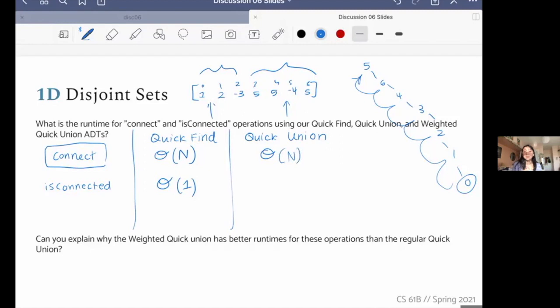And we see that all that happens in connect is that we find the parents of the two elements we're interested in, and then we set one to be equal to the other. So it's really just this time to find the root of our set or our set representative. And so this is linear. And very similarly is connected again is just looking for the parent of the two elements we're interested in. And so if we want to connect them, we again have to traverse this potentially really linked list-like structure all the way from top to bottom or bottom to top, which will be linear. And so that is why we have connect and is connected.